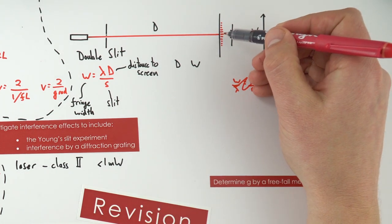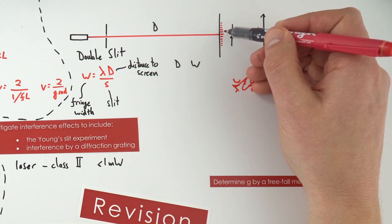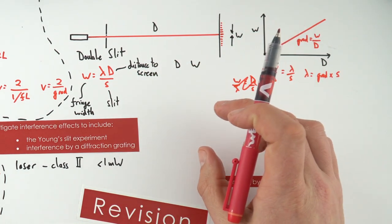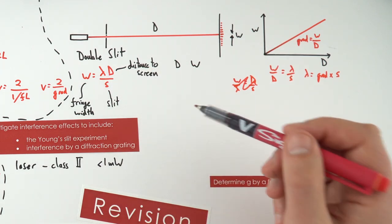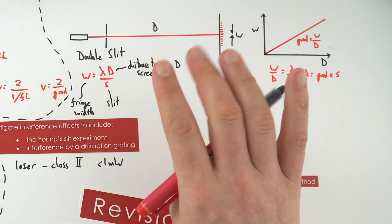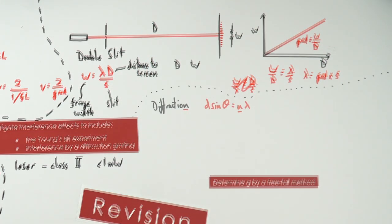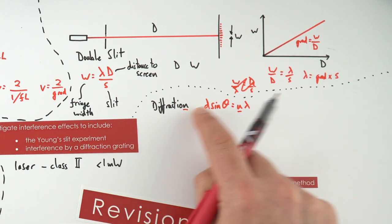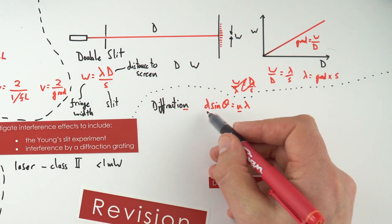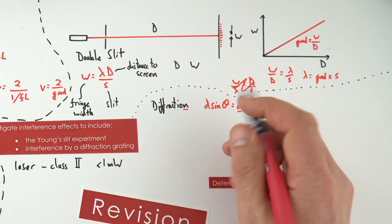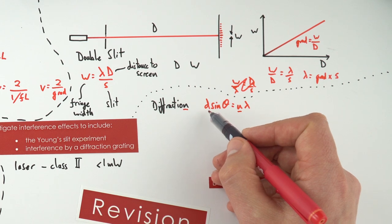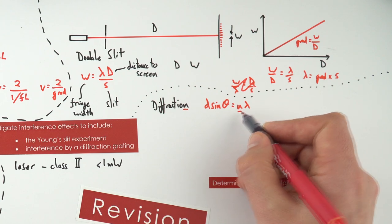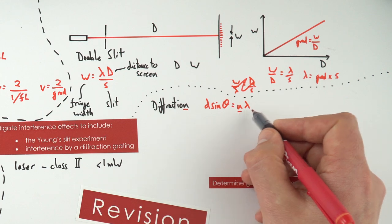One issue with the double slit is the fringes are quite dim - not much light gets through the small slit. A better way to find the wavelength is to use a transmission diffraction grating, which has many parallel lines and lets most light through. The diffraction grating equation is d·sinθ = nλ, where d is the spacing of the grating (convert lines per millimetre to metres), θ is the diffraction angle, n is the order (0, 1, 2, 3, etc.), and λ is the wavelength.